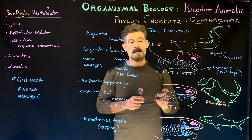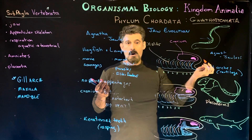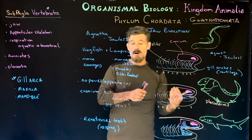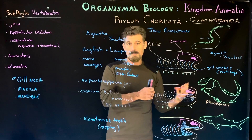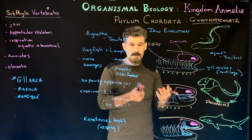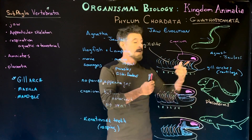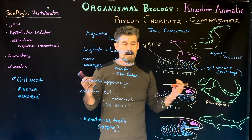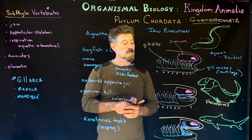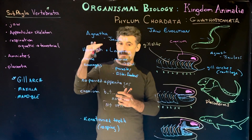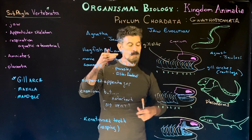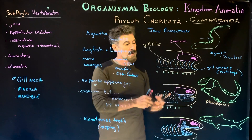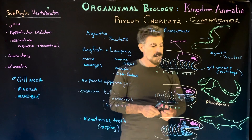Gnathostomata means jawed organisms — vertebrates that have a jaw belong to the gnathostomes. So everything from amphibians, fish with jaws, mammals, and birds — they're all jawed vertebrates. We generally have the cranium, vertebrae, and then a jaw as the next step along that evolutionary path.